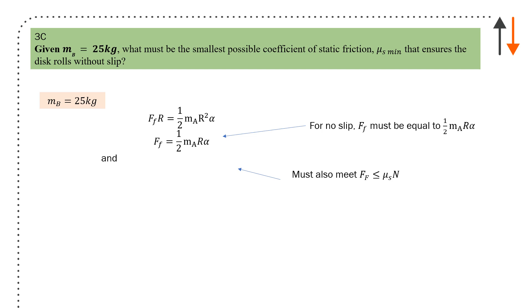Given mass of B equals 25 kilos, what is the smallest possible coefficient of friction mu_s_min that ensures the disc rolls without slip? First, no slip: force of friction has to equal one half m_A r alpha and also has to be less than or equal to mu_s times N. Put both together and set an equality between these two. Substitute in, put everything together, get rid of the masses, and you get mu_s_min equals 0.032.